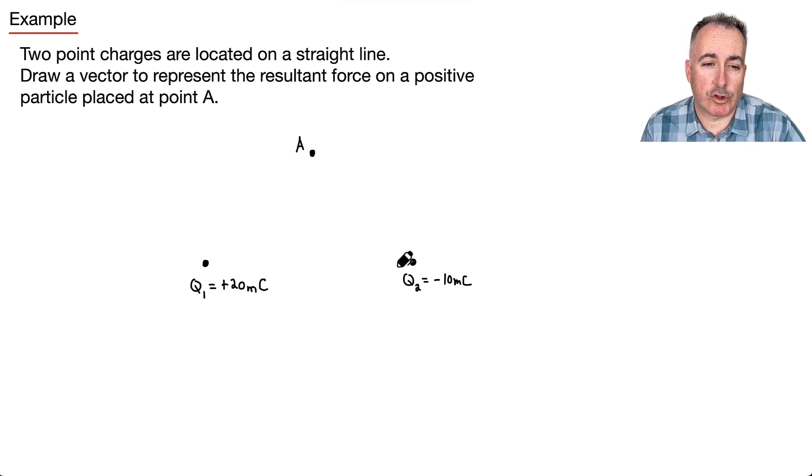Now, let's look carefully at these values right here. We have Q1 is positive 20 mC. M means milli, so it's millicoulombs. And Q2, however, is negative 10 millicoulombs. Now, the fact that it's millicoulombs doesn't really matter too much in this case as we're not having to calculate. But we do have to have an idea what's going to happen here.